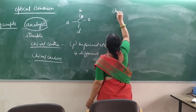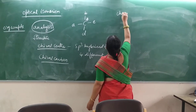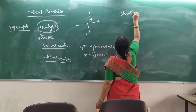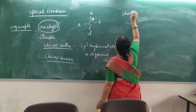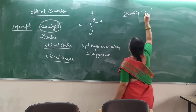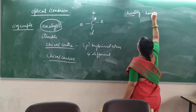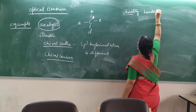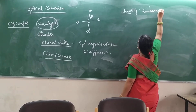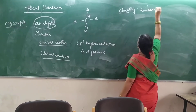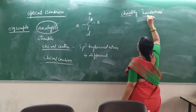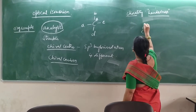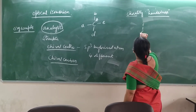We have one more term that is called chirality. Chirality is, again, related to handedness. This is the molecular structure ingredient.